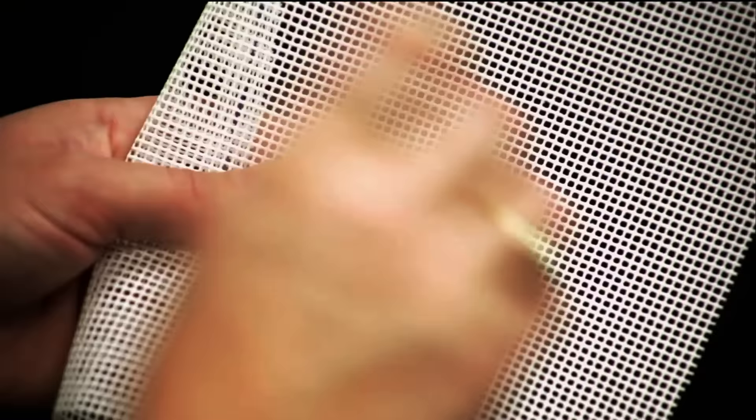Continue in this fashion stitching from right to left as you approach your waste knot. Cut the thread just below the knot and continue stitching.